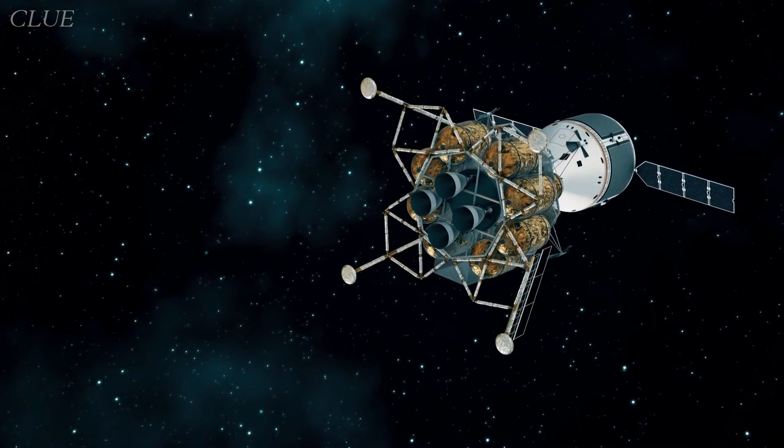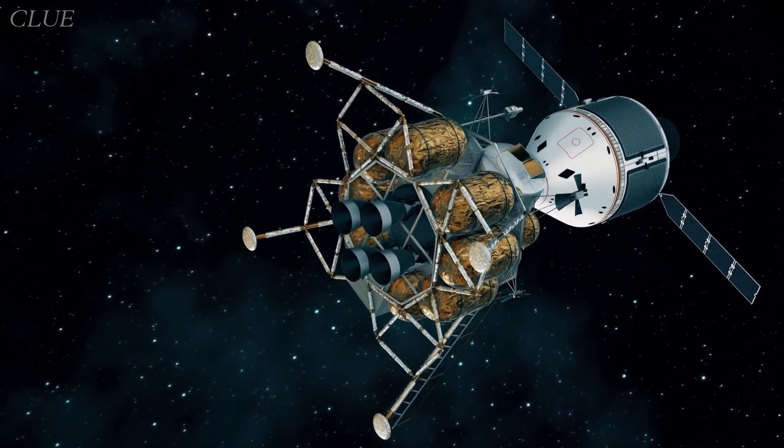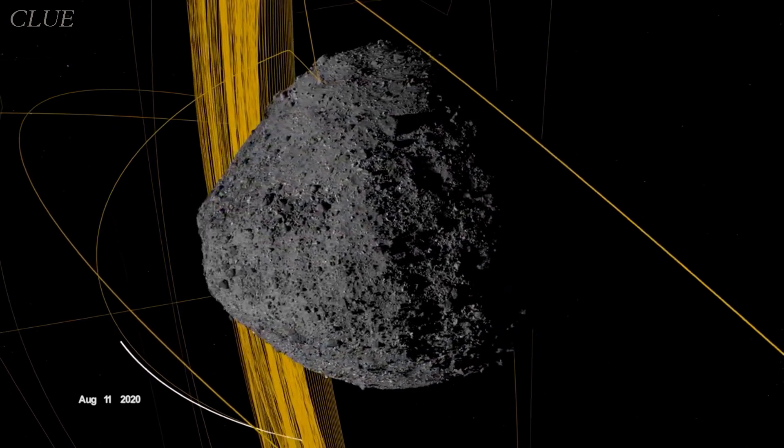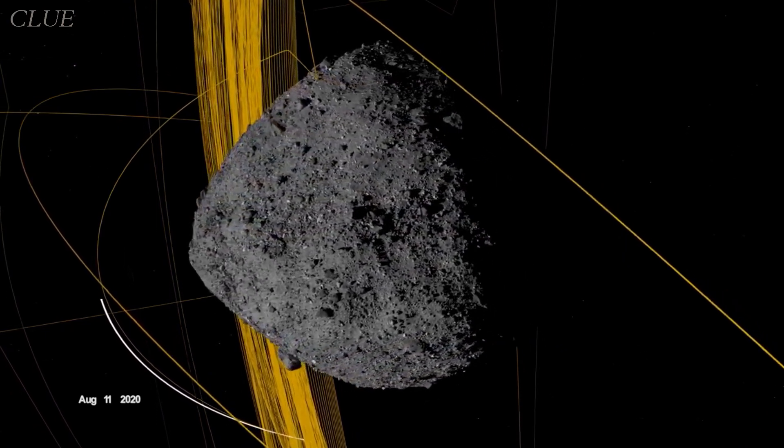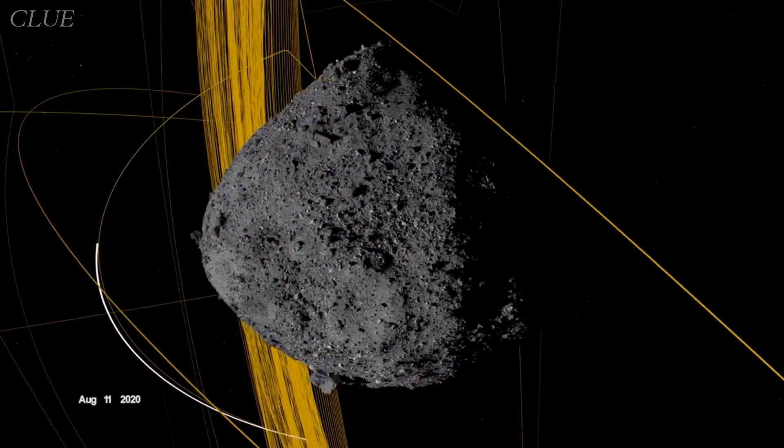This is the closest distance that any spacecraft has ever orbited a celestial body. While learning Bennu from this point, it took 62 hours for the spacecraft to complete a single orbit around the asteroid.